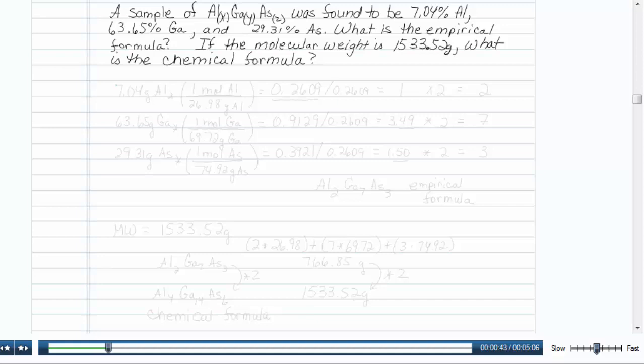So, here we have 7.04 grams of aluminum, and what we'll do is figure out moles of aluminum. The periodic table tells us that 26.98 grams of aluminum is in one mole of aluminum. We'll multiply that out, and find out that we have 0.2609 moles of aluminum.